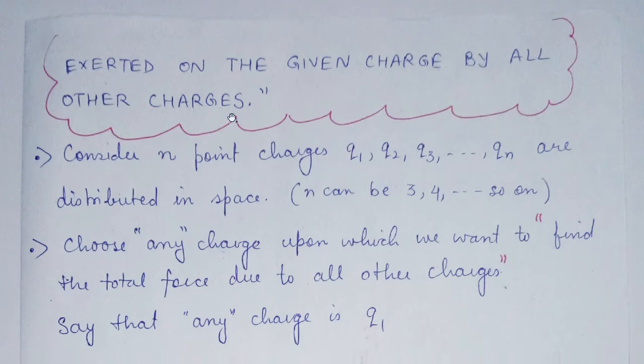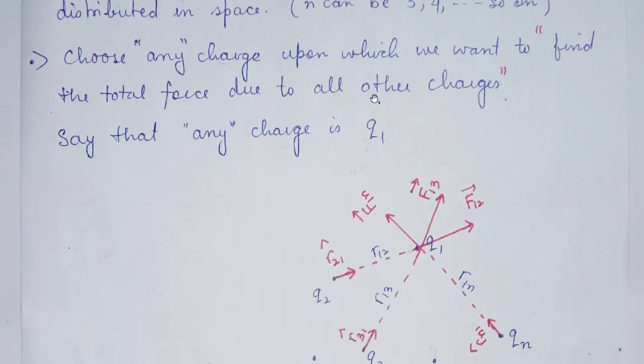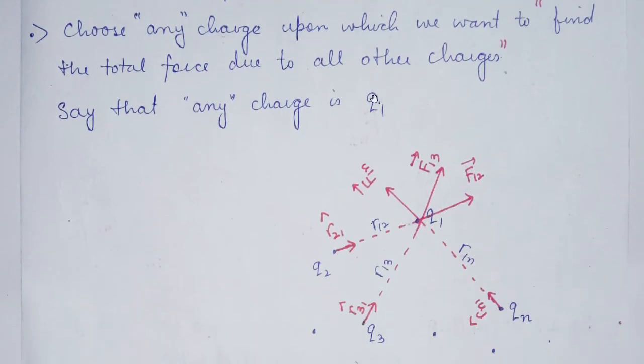Let us define this by example. Consider n point charges: q1, q2, q3, and so on to qn. We have n charges, and this is demonstrated in this diagram. First of all, choose any charge upon which we want to find the total force due to all other charges.